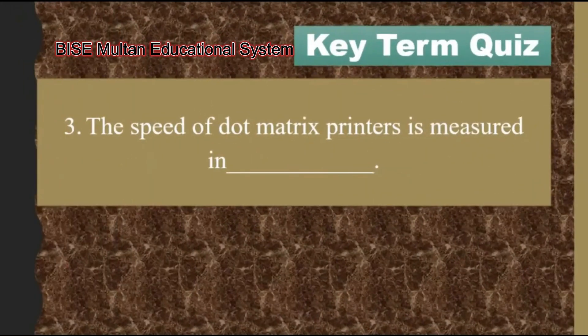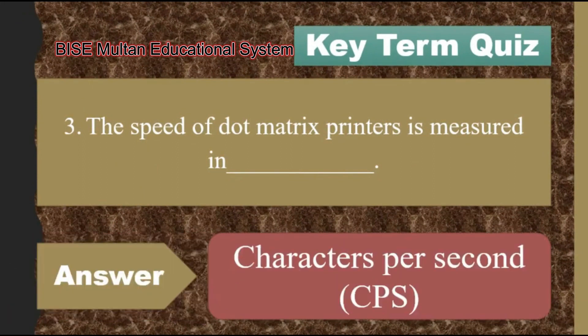Question number 3. The speed of dot matrix printers is measured in blank. The answer is characters per second, or CPS.